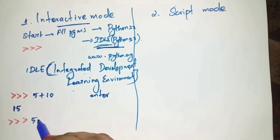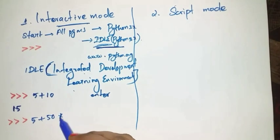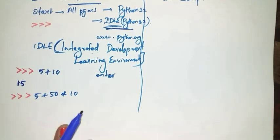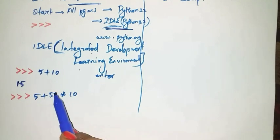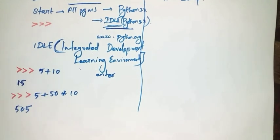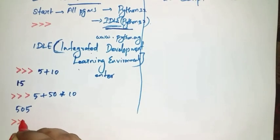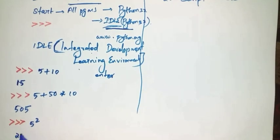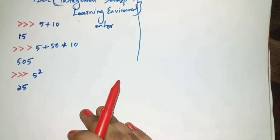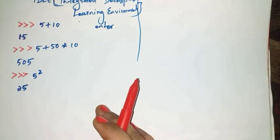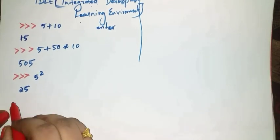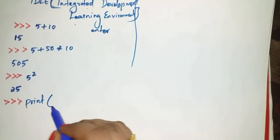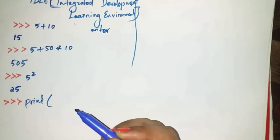Let's see another example: 5 + 50 * 10. It displays the result immediately — the output is 505. Let's see another example: 5 squared gives 25. Suppose if you want to print your name or print any statement, you write it using the print function.